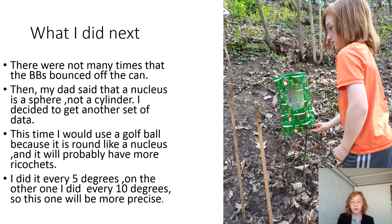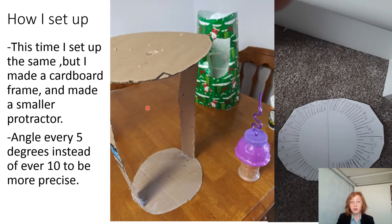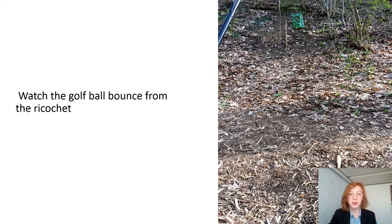What I did next was, since not very many ricocheted off my last test, I thought I'd do another test. But this time I would use a golf ball because it's a sphere and a nucleus is a sphere. I'd make it pretty much identical but just make it smaller. I'd hang it from a tree with a cardboard frame. There's the cardboard frame, there's the wrapping paper. This time when I made it, I made my protractor every 5 degrees instead of every 10. That way my readings would be more accurate. Look at the golf ball right there, and you'll be able to see it bounce because the ricochet is happening.